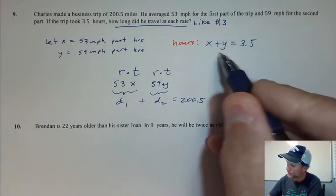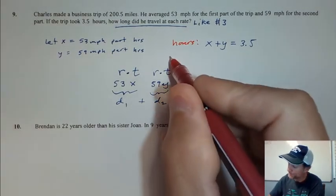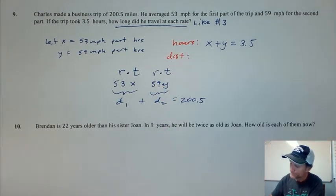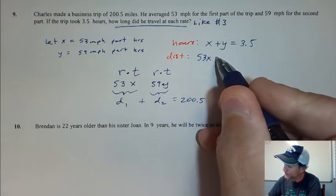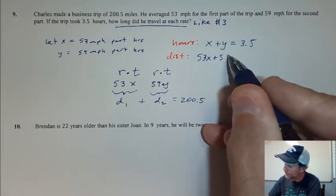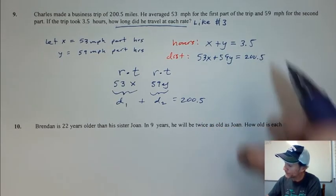I'm going to write my equation for distance right below hours here. I have 53x, and you can already see the matrix if you've been practicing these. 59y equals 200.5.